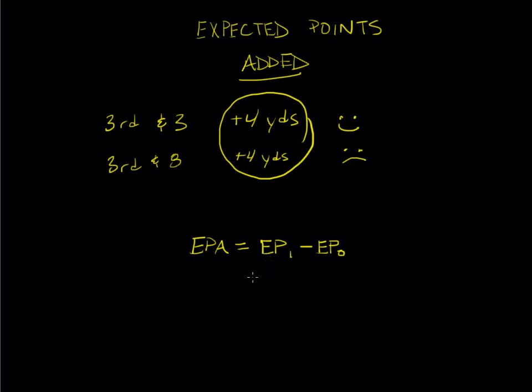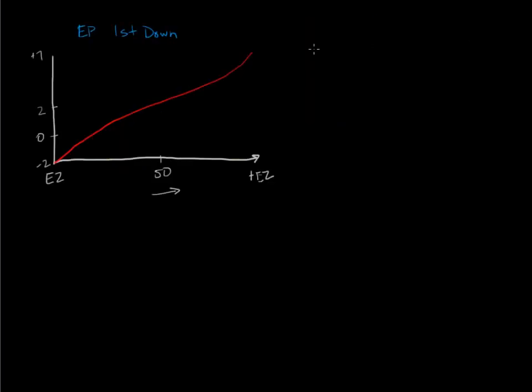Let's take a look at an example. Let's say that it's first and ten at midfield. This is our familiar expected point curve for first downs. Recall that this represents the field, this is the end zone where we're trying to score, this is midfield, the offense is moving this direction. The closer we get to scoring, the more expected points we have. At the most, right up against the goal line, we're just under seven points. It decreases as we move back through the field. First and ten at the fifty would be right here and that's worth about two expected points.